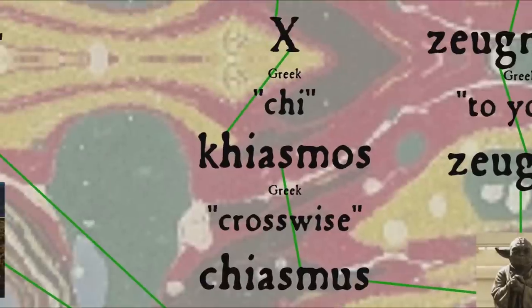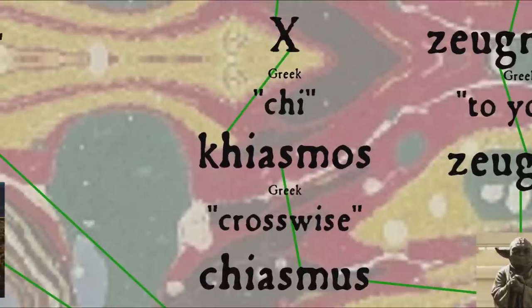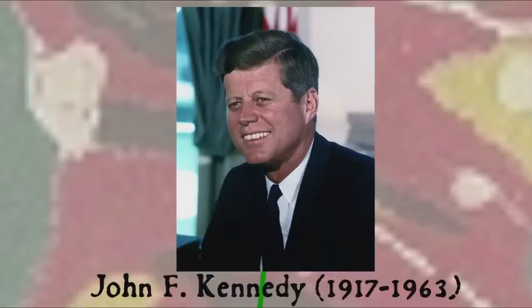And chiasmus, Greek for crosswise or shaped like the letter chi, in which the syntactical structure is reversed or mirrored, can be seen in John F. Kennedy's famous line, ask not what your country can do for you, ask what you can do for your country.